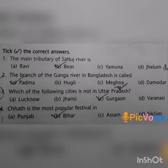Second question: The branch of the Ganga river in Bangladesh is called? Option A: Padma. Option B: Hooghly. Option C: Meghna. Option D: Damodar. Answer is option A: Padma.